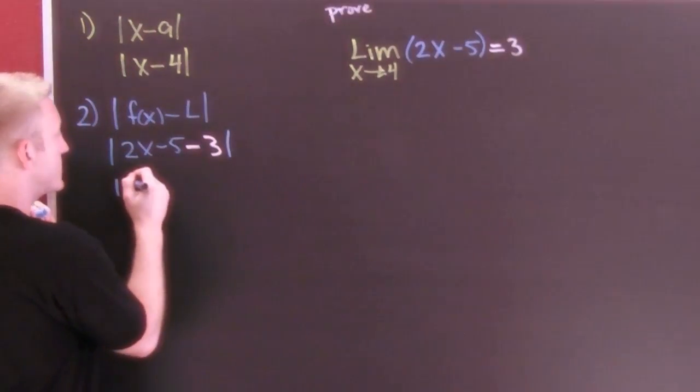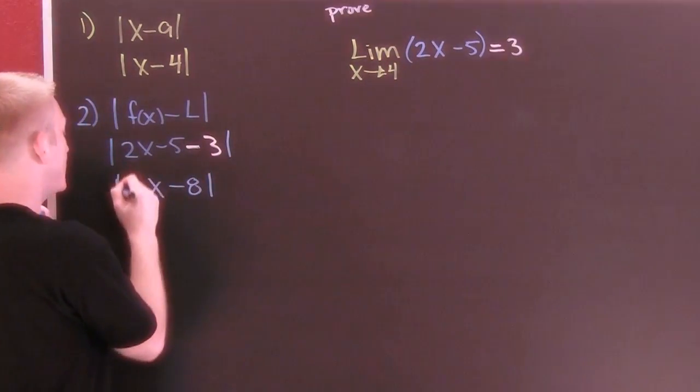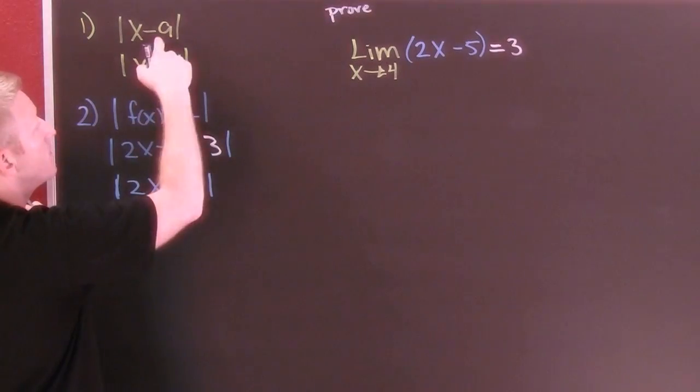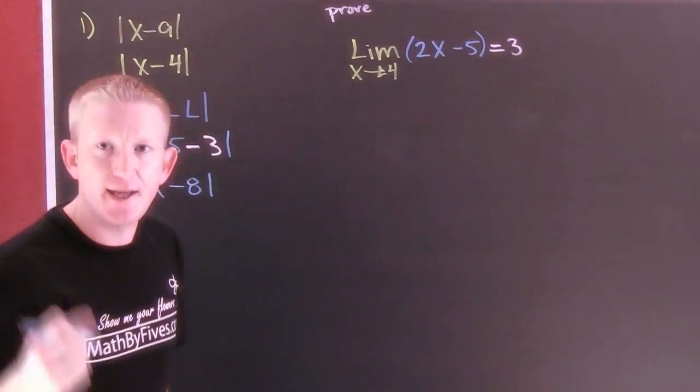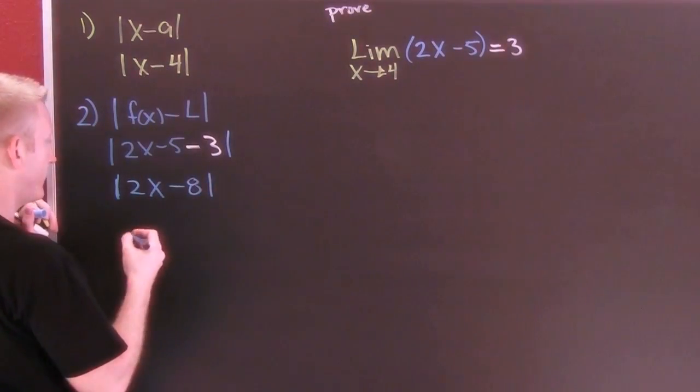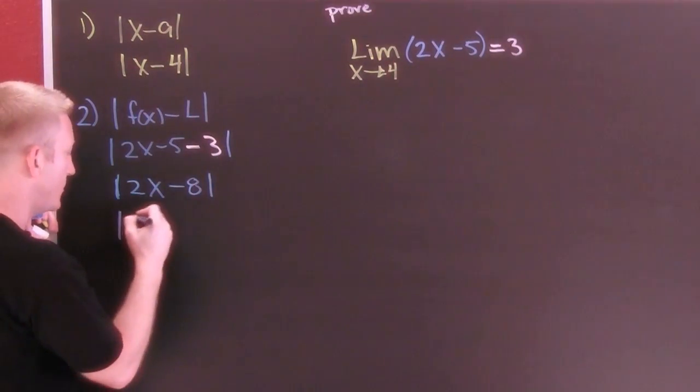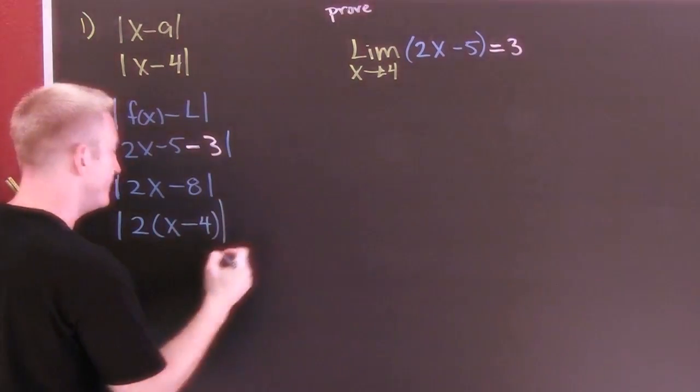Now here we go, this is the absolute value of 2x minus 8. Great. And the reason our first step said identify this, now we need to massage and manipulate that absolute value in order to get what we were looking for. So you see here we can factor out a 2, and we get an x minus 4.